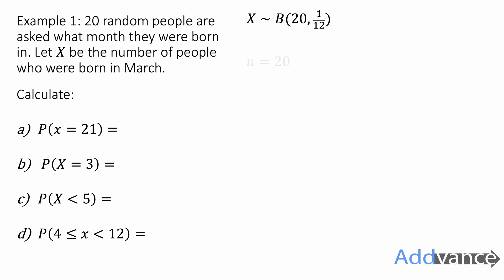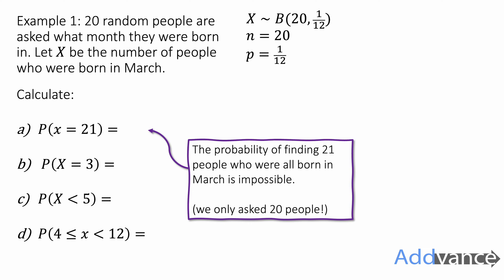Now let's look at calculating these probabilities. The probability that x equals 21 is impossible — we cannot get 21 people being born in March if we only asked 20 people. So obviously this is impossible because we've only asked 20 people; it's impossible to get 21 people born in March. So the probability is zero.